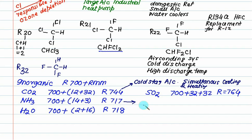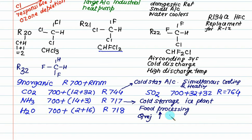R717, that is ammonia, is for cold storage, ice plants, and food processing industry. Heat rejected in ammonia compressors is very high, so ammonia compressors are normally water-cooled. Extra heat is carried by water jacket.